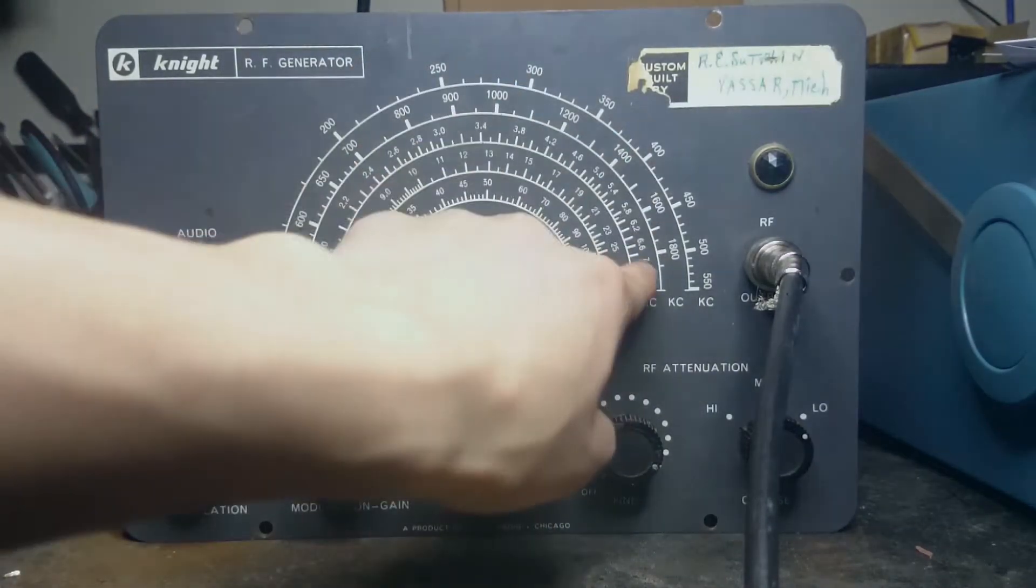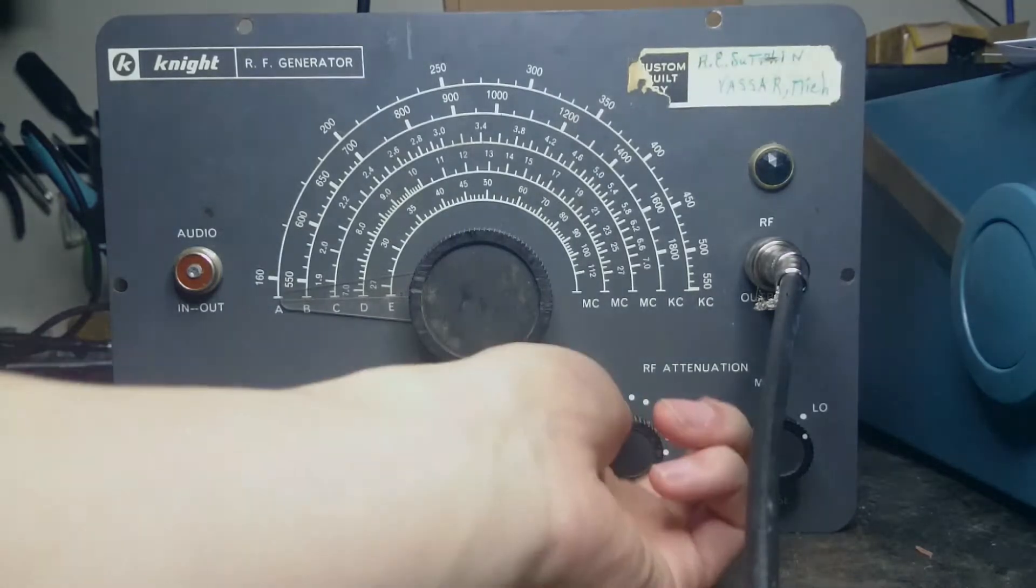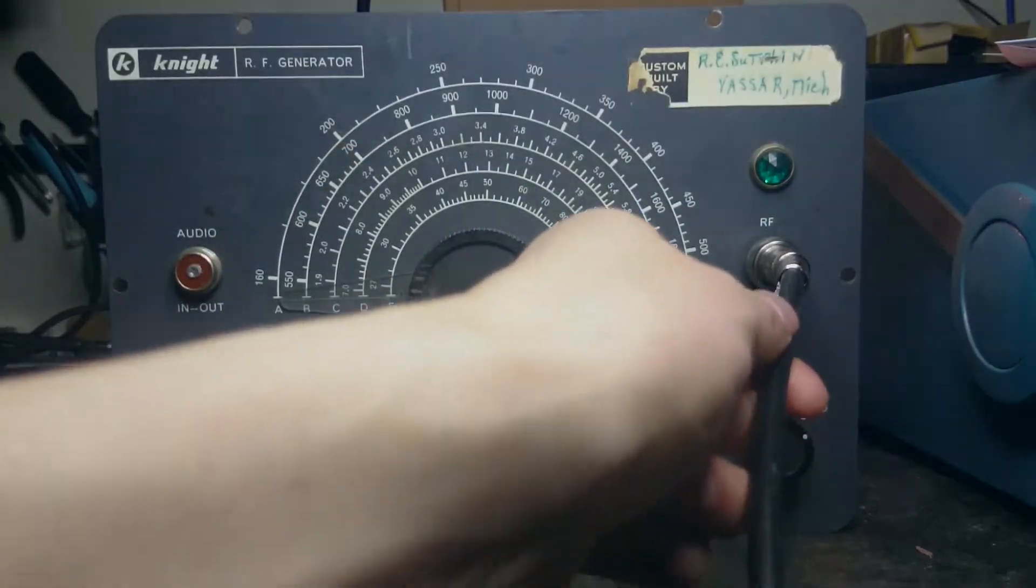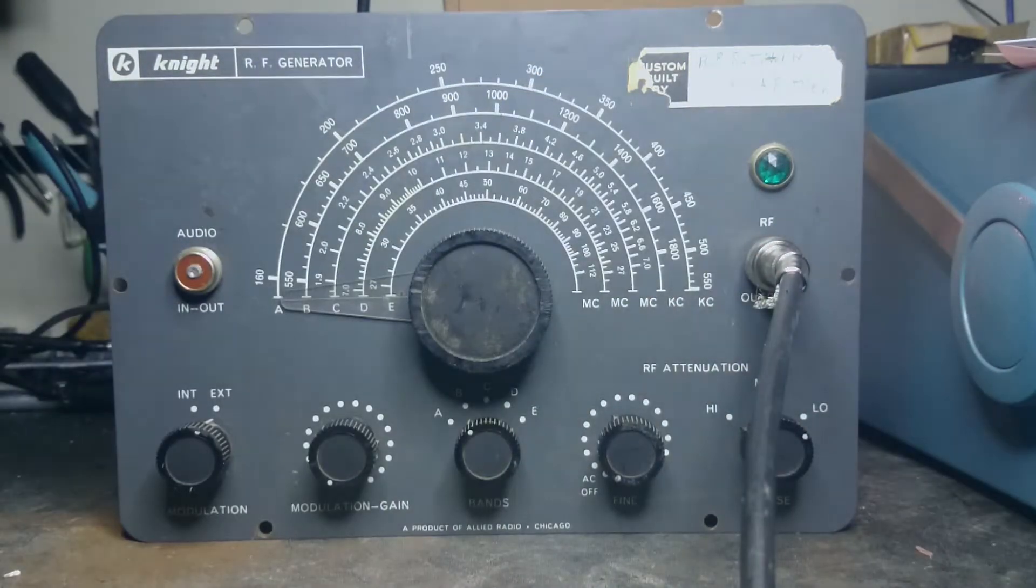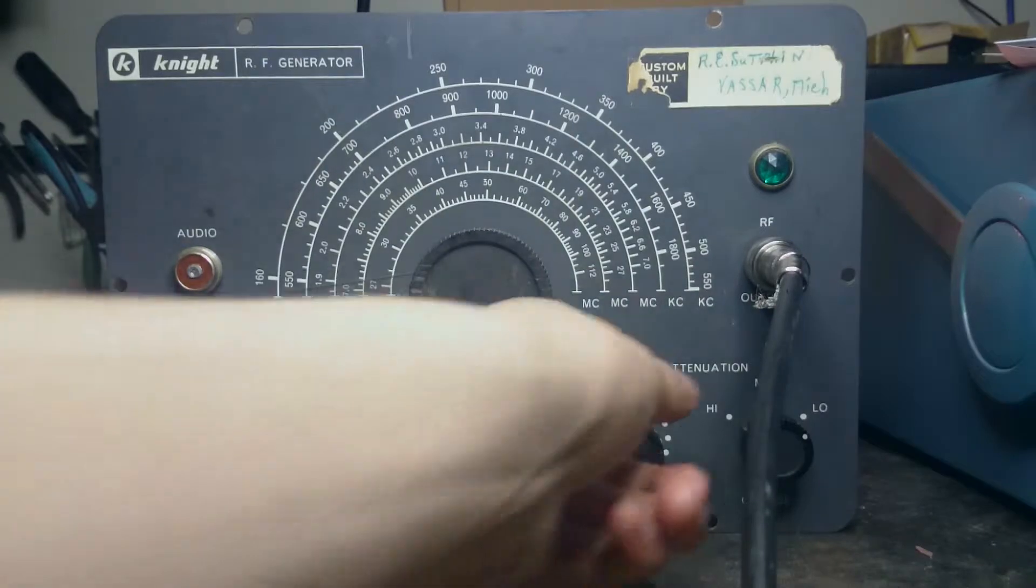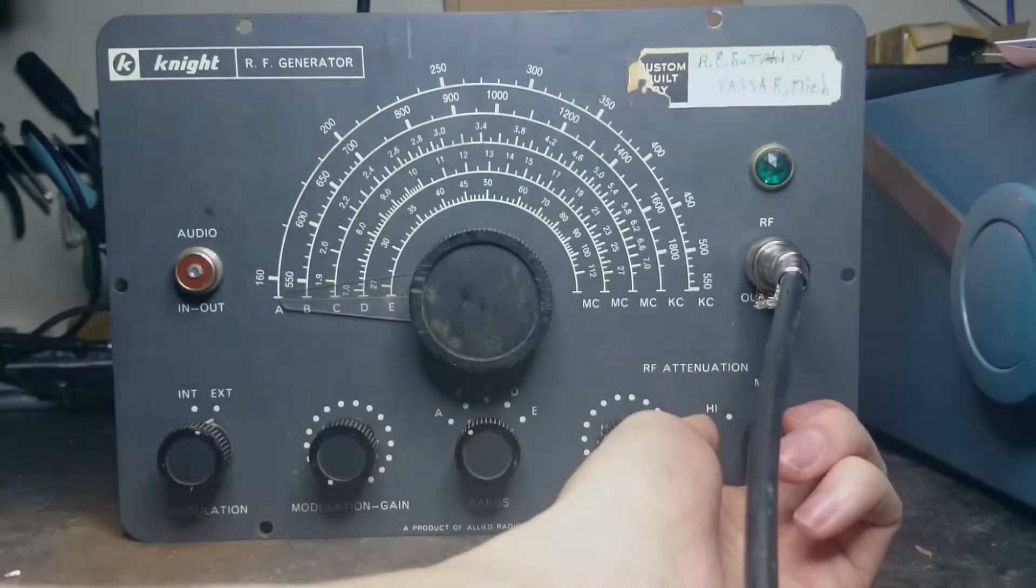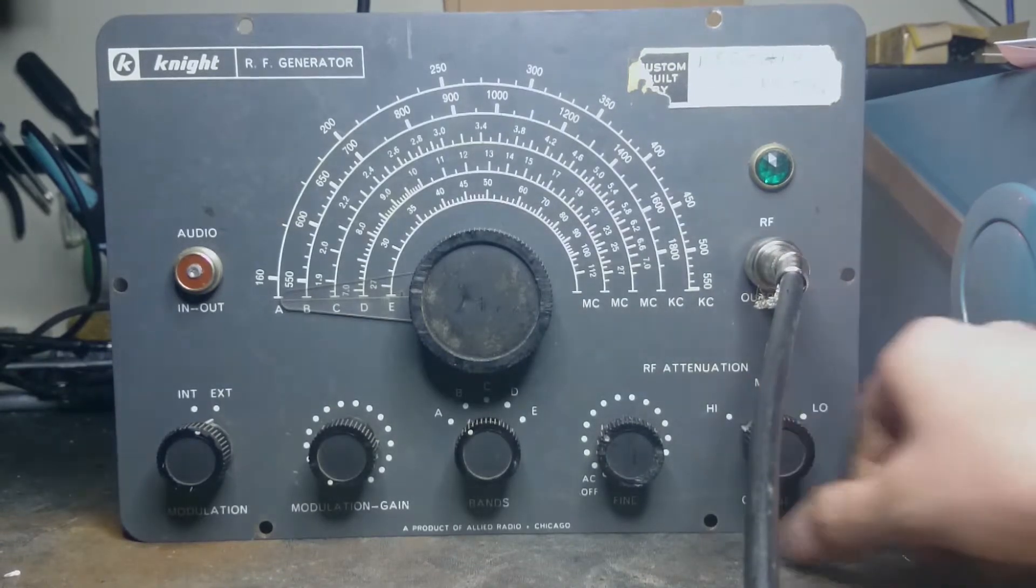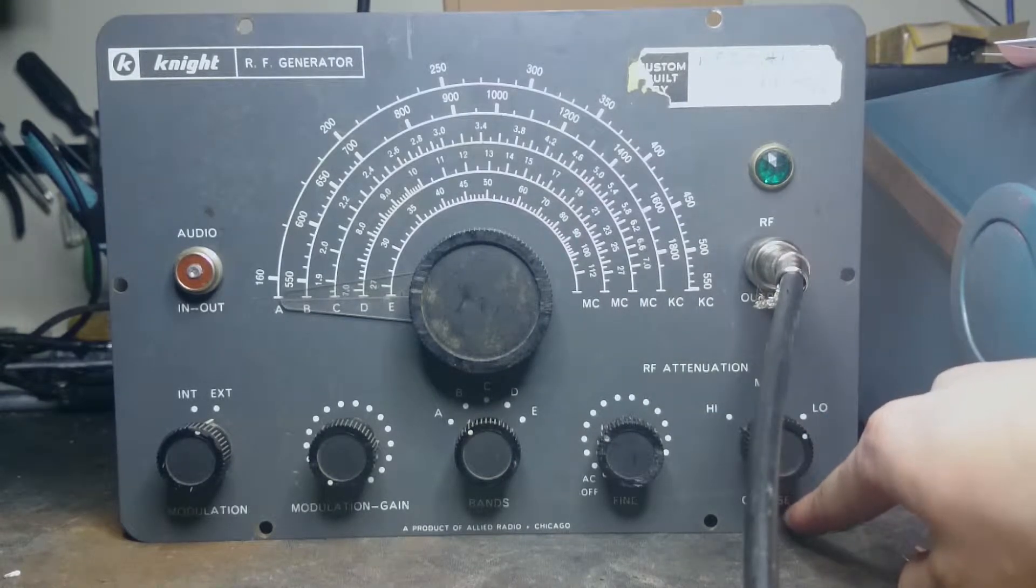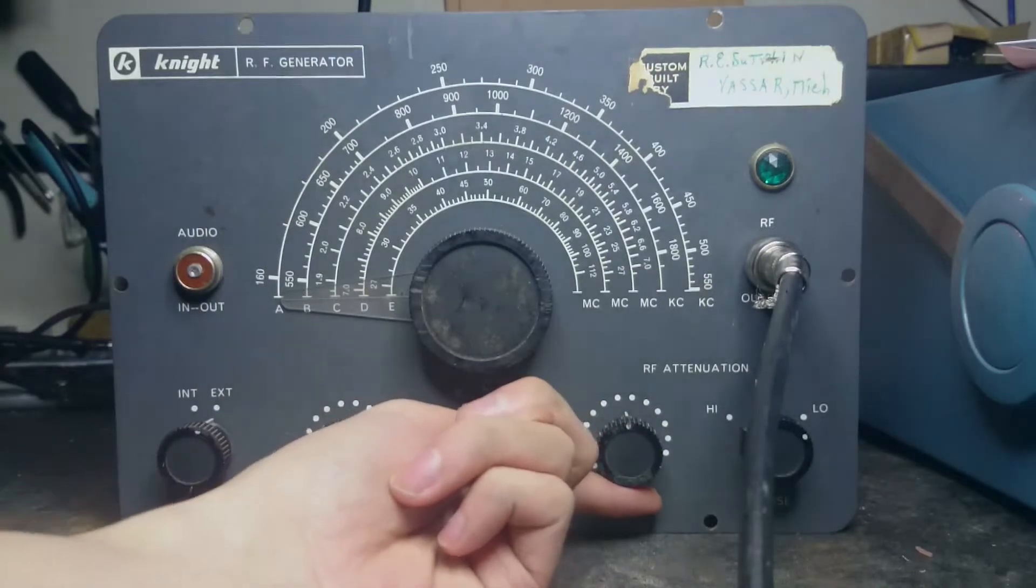Here are the band selectors: A, B, C, D, E, matching up with the five bands. If you turn to band B, for example, you'd be using the range from 550 kilohertz to about 1.8 megahertz. The power switch is next. This dot is misaligned. The light is actually a little bit flaky. This also acts as an RF output controller, and finally we have the attenuation knob with high, medium, and low settings.